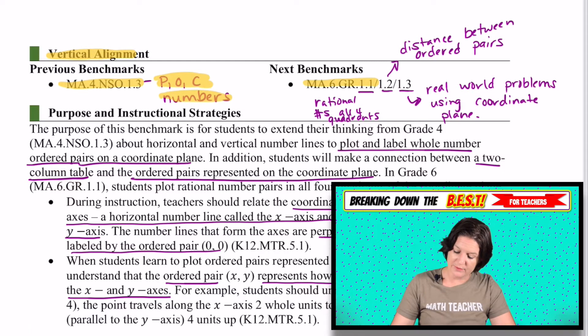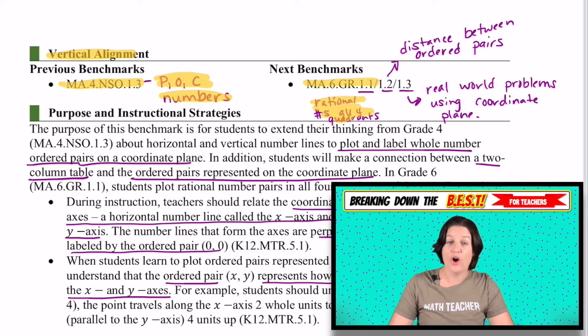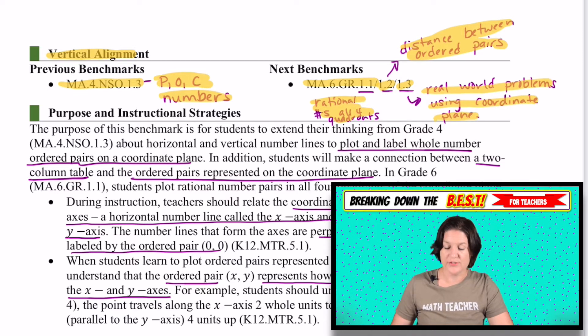And then in sixth grade, we've got, for this geometric reasoning standard, they will be using rational numbers in all four quadrants. 1.2 is the distance between order pairs. And 1.3 involves real-world problems using the coordinate plane. So you can see we're getting the basics in fifth grade, but there's so much work to be done. And if you remember, there's a lot of work to be done using the coordinate plane in the upper grades.